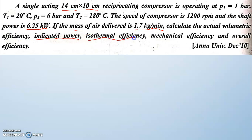Isothermal efficiency is a ratio between isothermal power and actual power. Actual power is the power developed by the compressor from our equation, and isothermal power uses the derived isothermal equation. Mechanical efficiency is the ratio of indicated power to shaft power. Overall efficiency is the product of volumetric efficiency, isothermal efficiency, and mechanical efficiency.